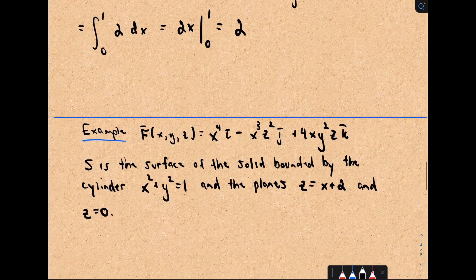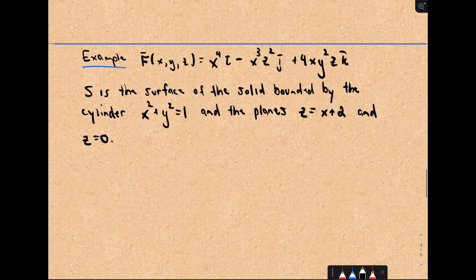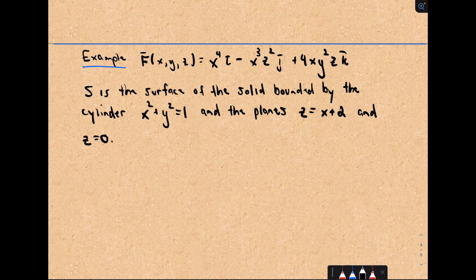Let's look at one more example. Here our function F is equal to x⁴ i − x³z² j + 4xy²z k. And S is going to be the surface of the solid bounded by the cylinder x² + y² = 1, and the planes z = x + 2 and z = 0.